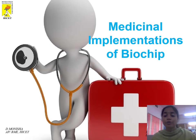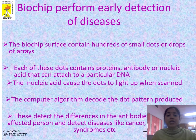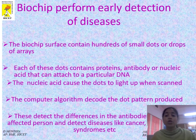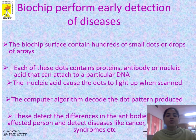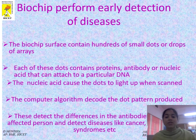Medicinal implantation of biochip: The biochip performs earlier detection of diseases. The biochip surface contains hundreds of small dots or arrays, each containing proteins, antibodies, or nucleic acids that can attach to a particular DNA. The nucleic acid causes the dots to light up when scanned. The computer algorithm decodes the dot pattern produced, detecting differences in antibodies to identify diseases like cancer and respiratory syndromes.